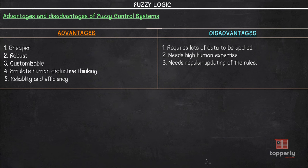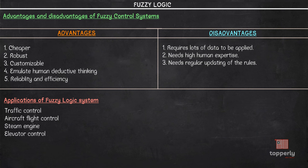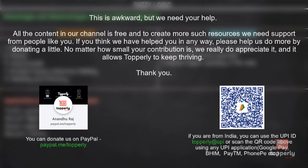Some applications of fuzzy logic systems include traffic control, aircraft flight control, steam engine control, elevator control, and a wide variety of other applications. I hope the concepts taught in this lecture were clear. If you have any doubts, please feel free to ask in the comment section below. If you found this video useful, please like the video and support us by subscribing to the channel.